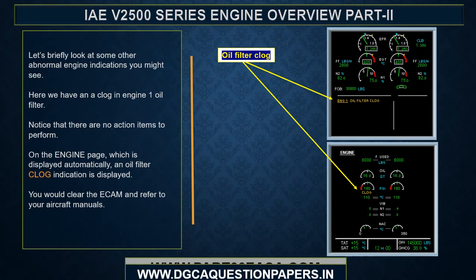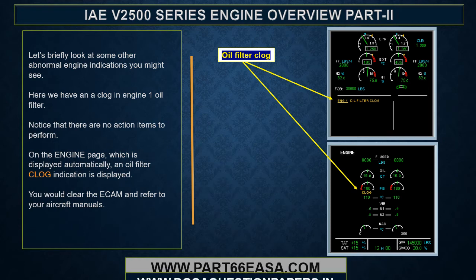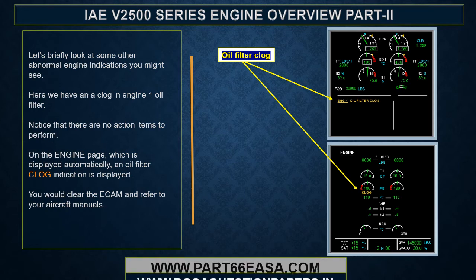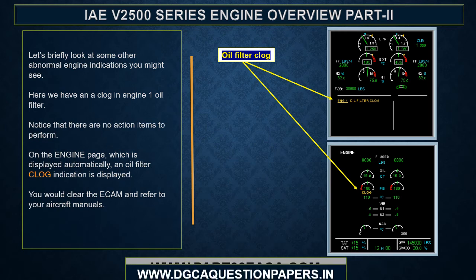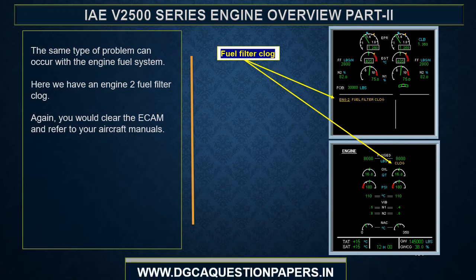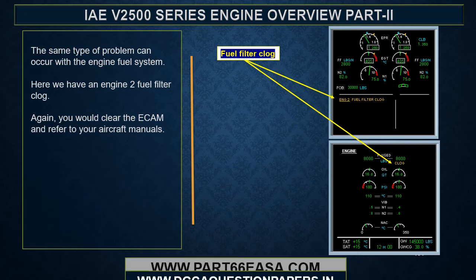Let's briefly look at some other abnormal engine indications you might see. Here we have a clog in the engine 1 oil filter — notice that there are no action items to perform. On the engine page, which is displayed automatically, an oil filter clog indication is displayed. You would clear the ECAM and refer to your aircraft manuals. The same type of problem can occur with the engine fuel system — here we have an engine 2 fuel filter clog; again, clear the ECAM and refer to your aircraft manuals.